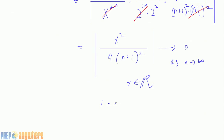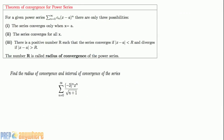Since the limit is 0 for all real values of x, this function is absolutely convergent. The domain is all real numbers, or in interval notation, (-∞, ∞). Now for the theorem of convergence for power series: for any given power series there are only three possibilities — it converges only at x = a, it converges for all x (like the Bessel function), or there exists a positive radius r.